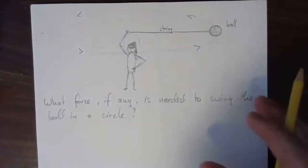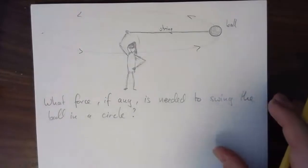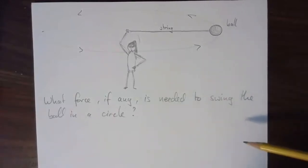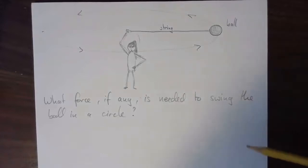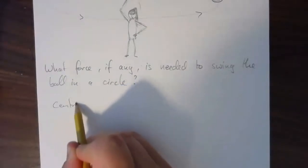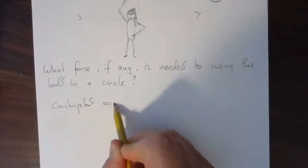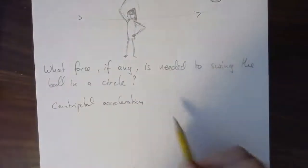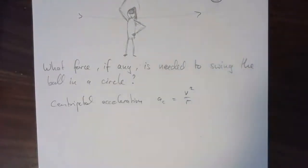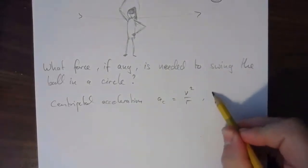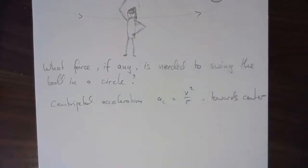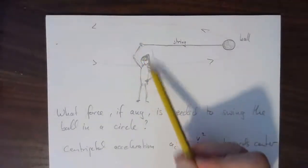Luckily, we've already done the necessary analysis in the previous lecture on centripetal accelerations — if you don't remember that, pause and review it. We know that centripetal acceleration, the acceleration of something going in a circle, AC, is given by V squared over R, and it points towards the center of the circle — in this case, towards the hand.